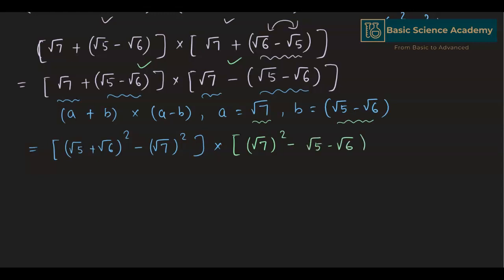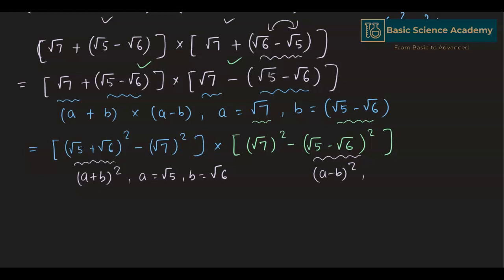(√5 + √6)² is in the form of (a+b)² where a equals √5 and b equals √6. And (√5 - √6)² is in the form of (a-b)². The formula for (a+b)² is a² + b² + 2ab, and the formula for (a-b)² is a² + b² - 2ab.